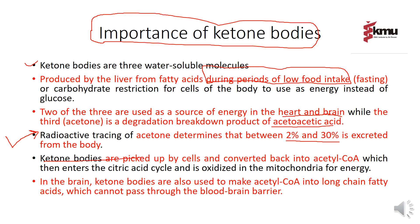Ketone bodies are converted to acetyl-CoA, which then enters the citric acid cycle and is oxidized in the mitochondria for energy production in the brain. Ketone bodies are also used to make acetyl-CoA into long-chain fatty acids, which can pass through the blood-brain barrier (BBB). This is the importance of ketone bodies for brain energy production.